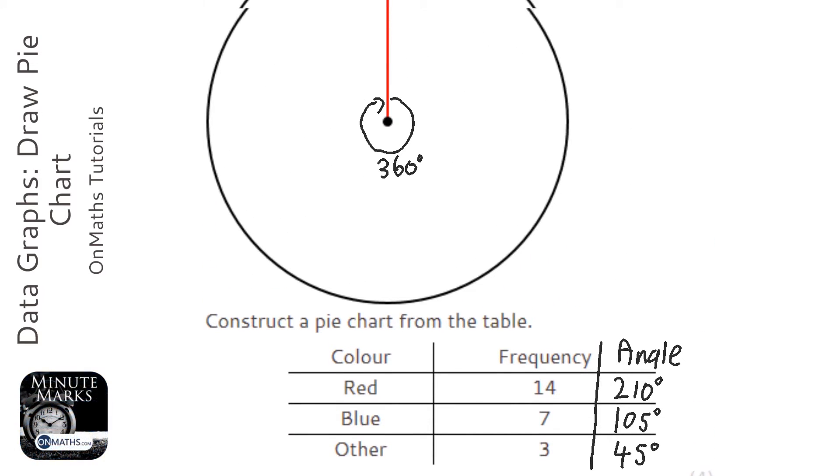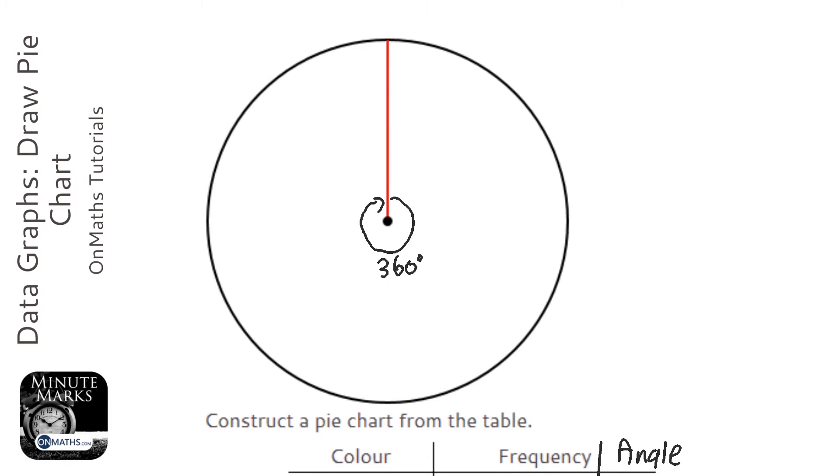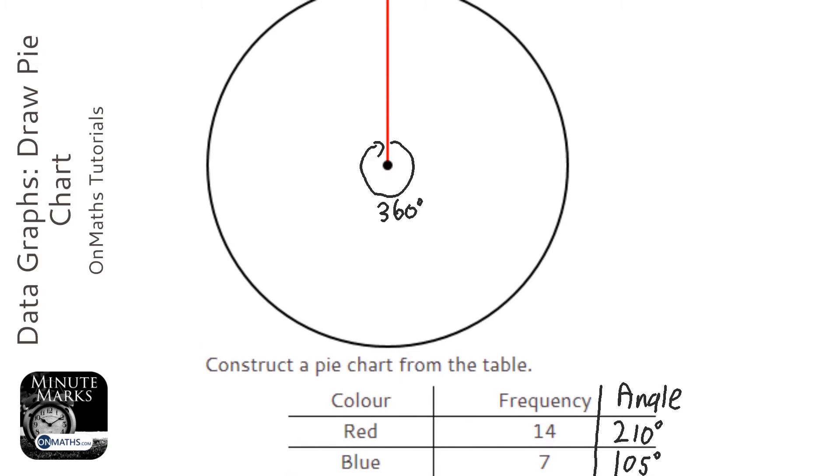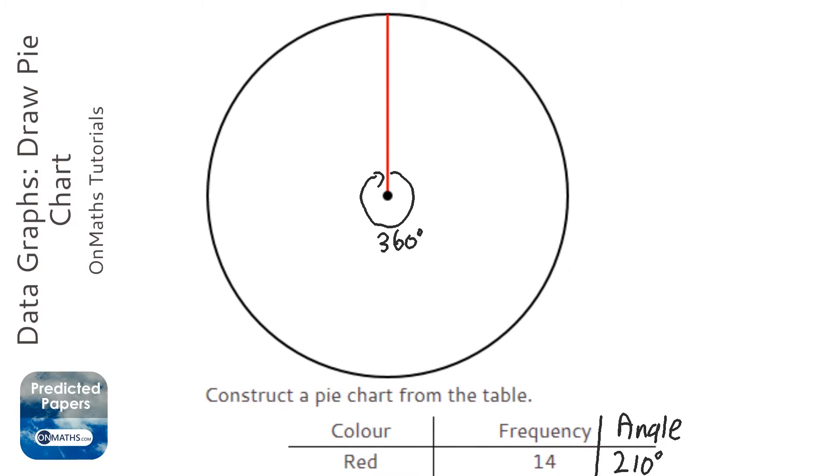And then you need to plot it onto the pie chart. Now, I don't have a protractor on this, so I can't physically do it. And to be honest, it's much more helpful to physically print this out, do it on a piece of paper and get someone to help you use the protractor if you're not 100% sure.